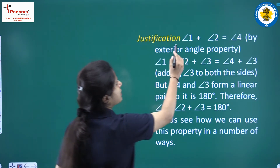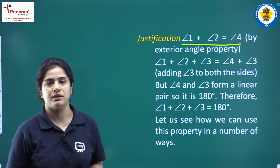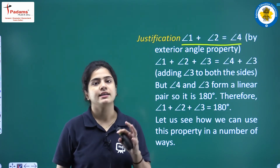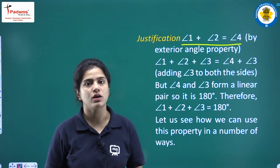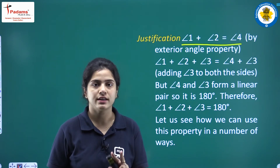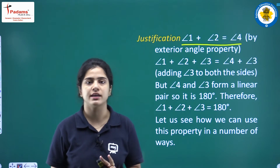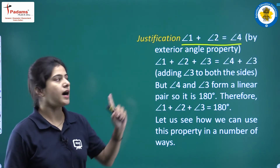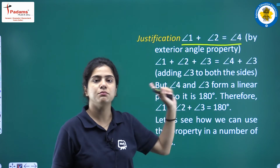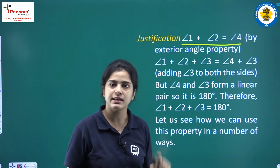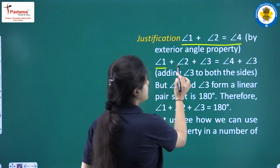So angle 1 plus angle 2 equals angle 4, by the exterior angle property. Now we will add angle 3 on both sides. Adding angle 3 to both sides gives us angle 1 plus angle 2 plus angle 3 equals angle 4 plus angle 3.